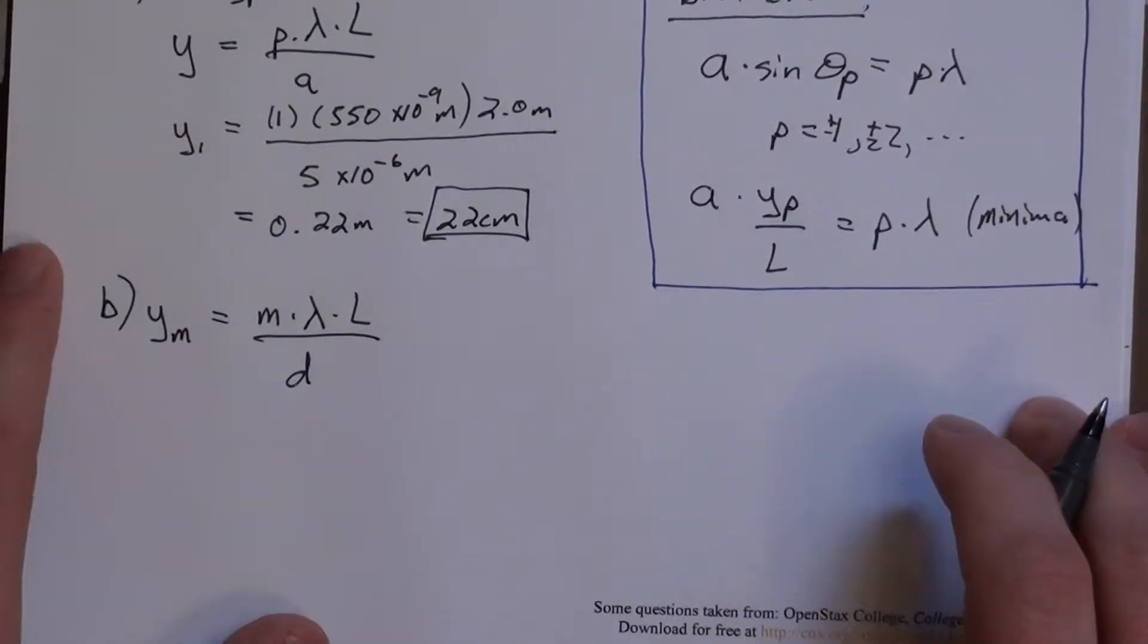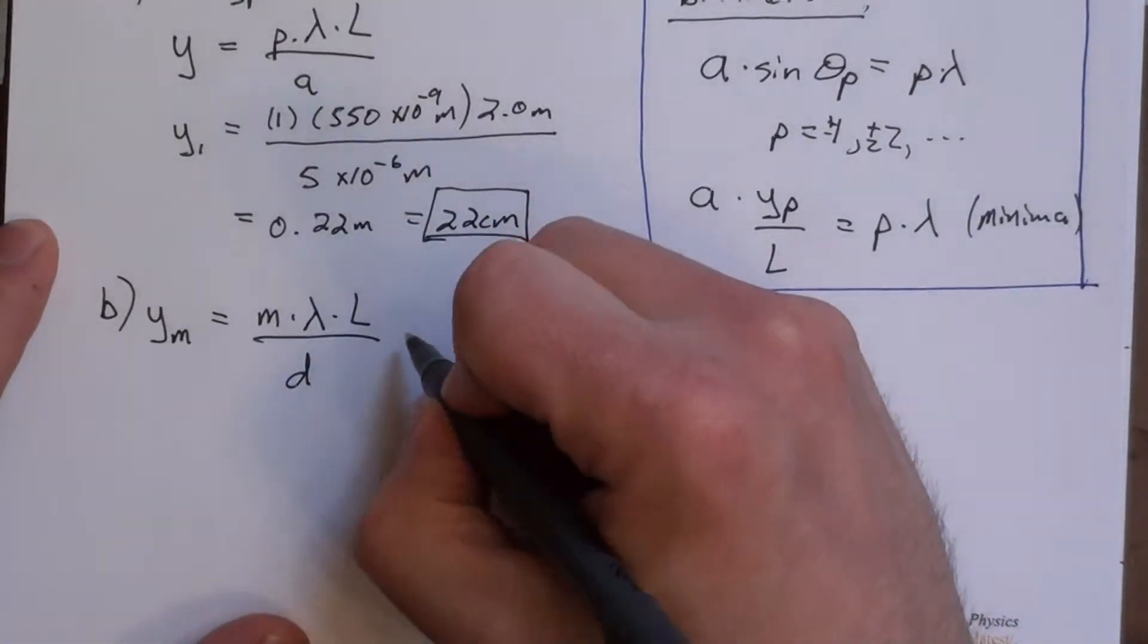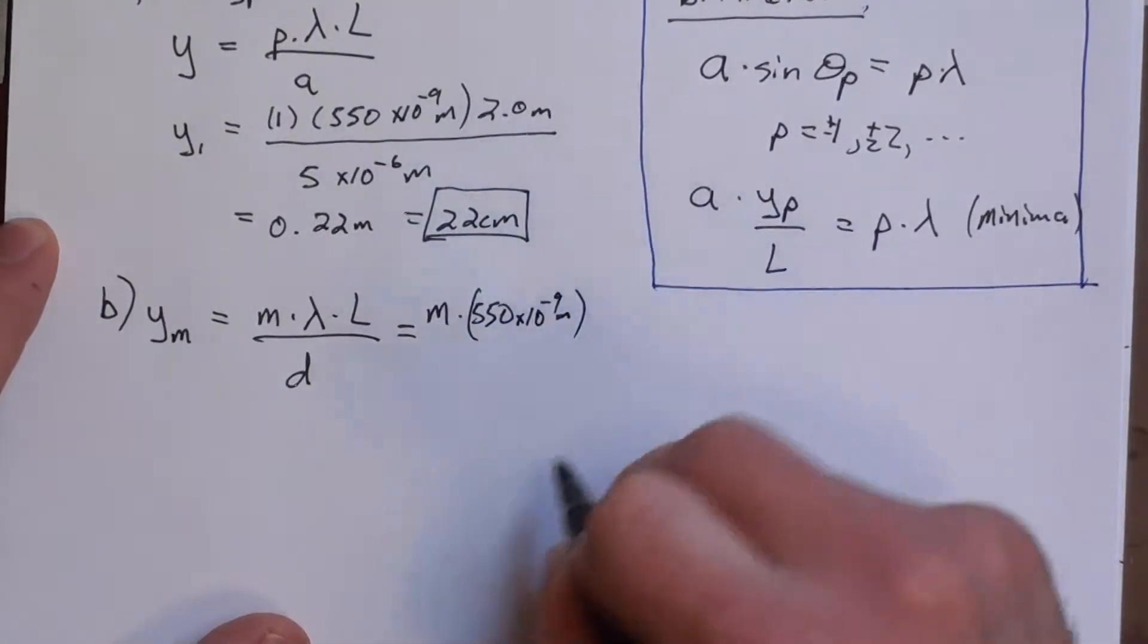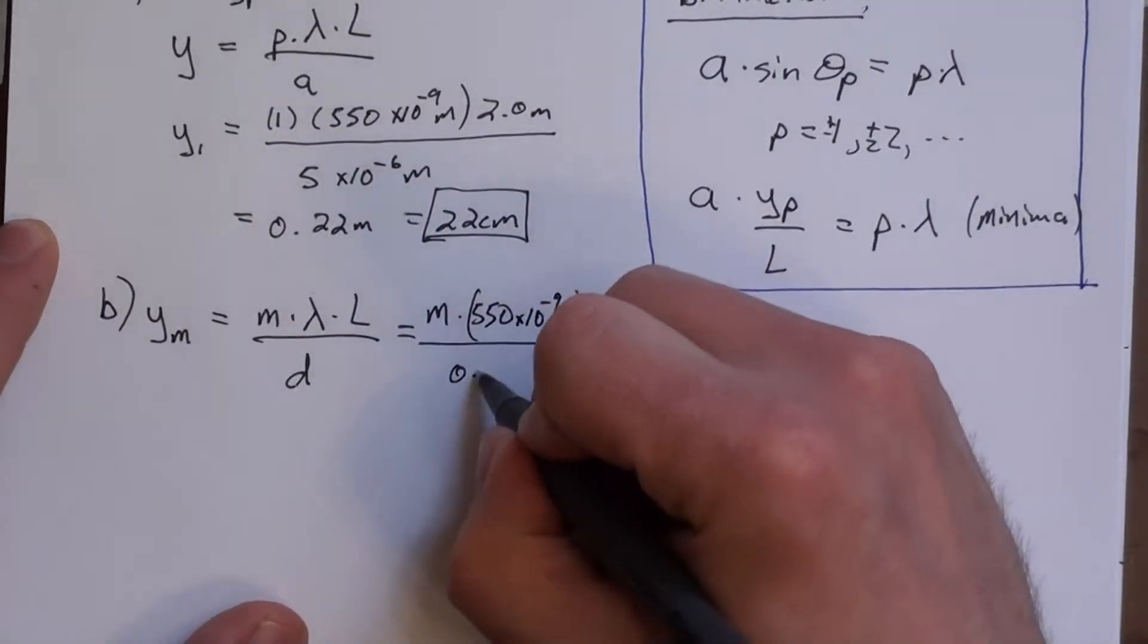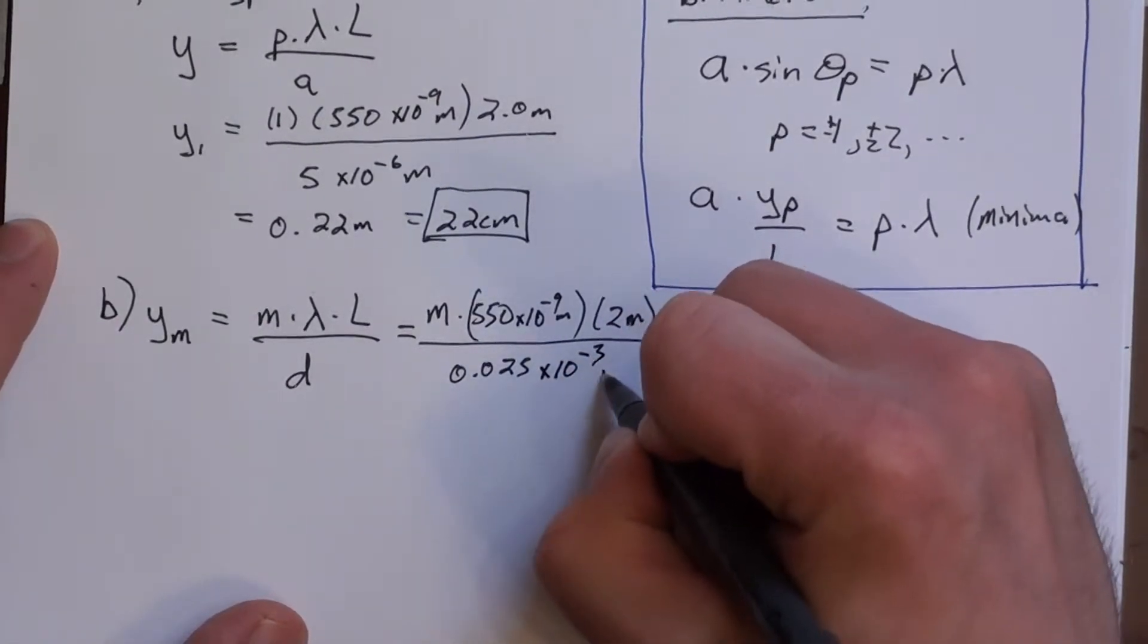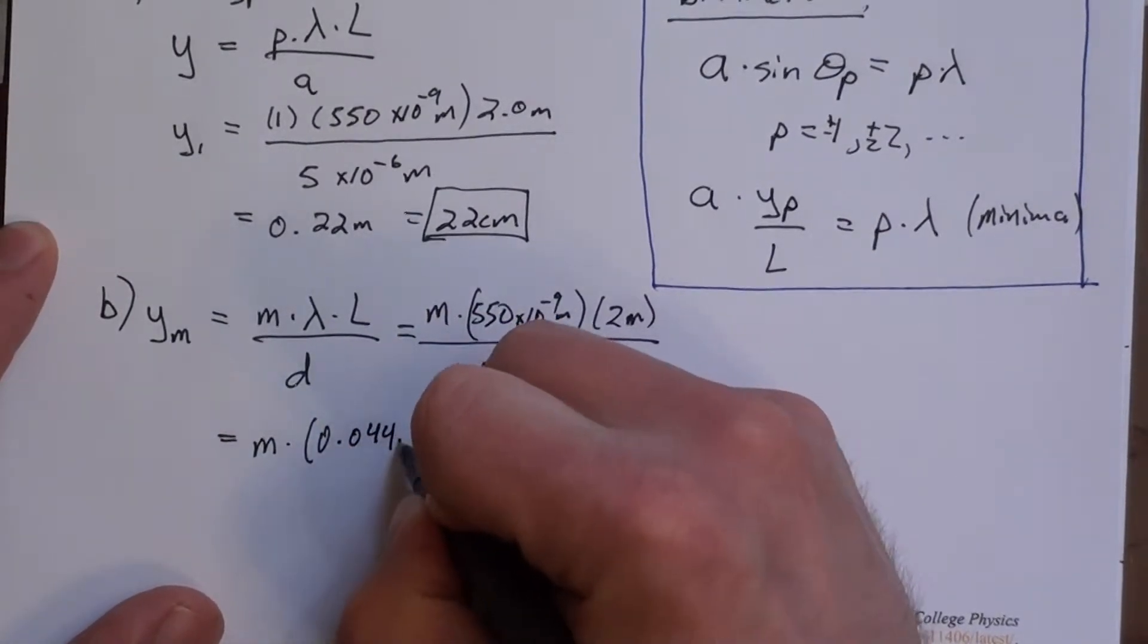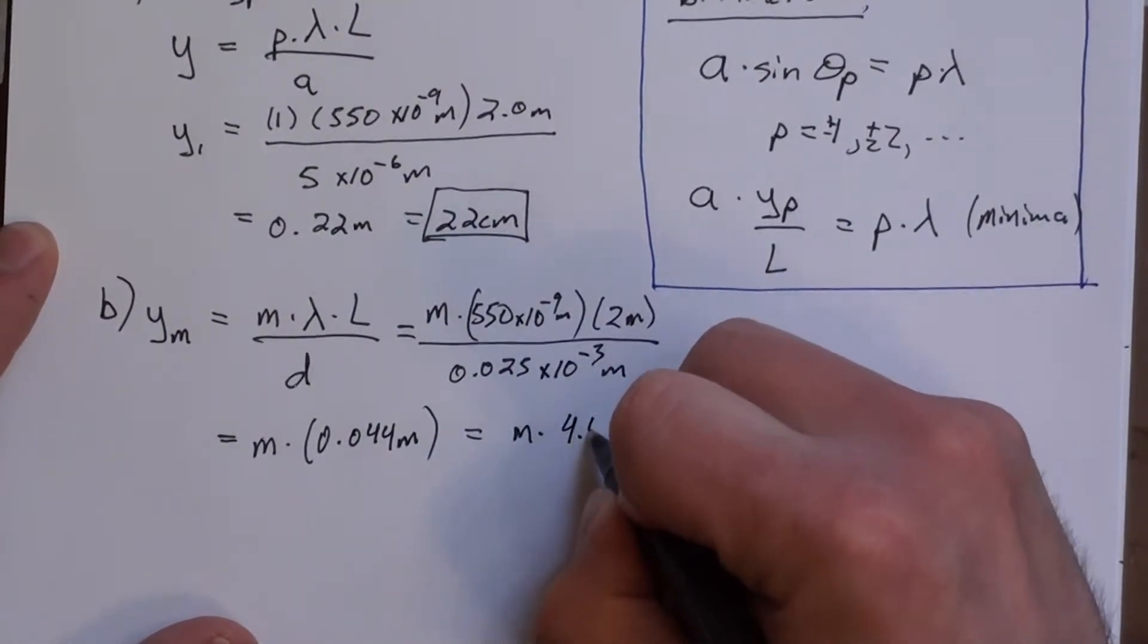So I don't know M quite yet, but I do know lambda, L, and D are fixed values. So I'm going to plug those in and just leave M out by itself. So lambda was 550 times 10 to the minus 9 meters, L was 2 meters, and D is 0.025 millimeters, so that's 10 to the minus 3 meters. So when you do that math, what you get is M times 0.044 meters, or we can write this as M times 4.4 centimeters.